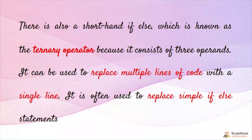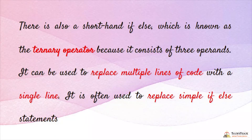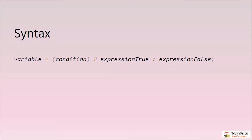The ternary operator is called so because it consists of three operands. It can be used to replace multiple lines of code with a single line and is often used to replace simple if-else statements. The syntax uses a question mark and colon: condition ? expression_if_true : expression_if_false.